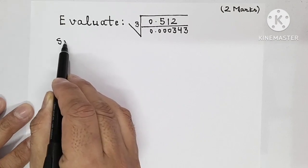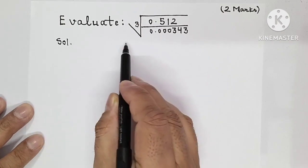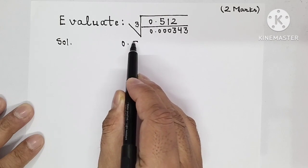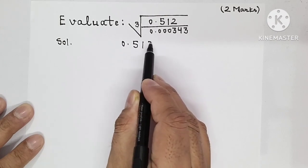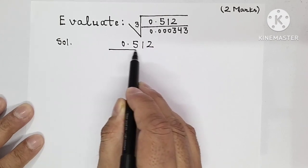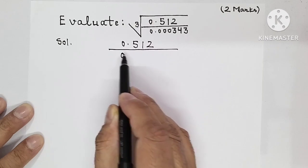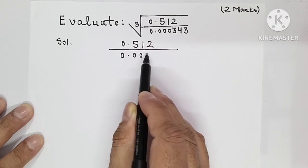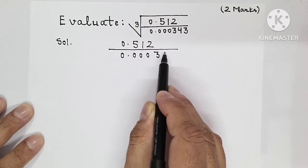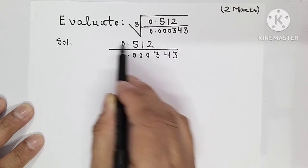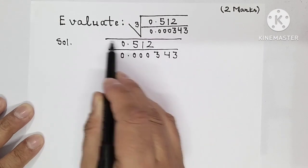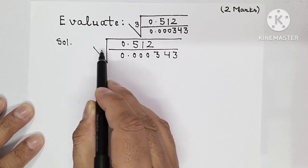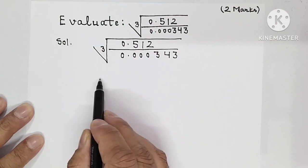The solution to this question involves evaluating the cube root of 0.512 upon 0.000343. So what can be done?